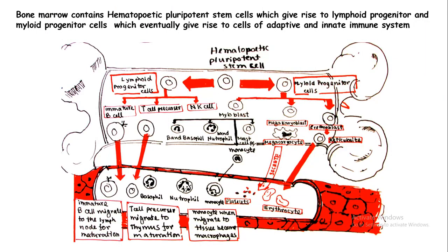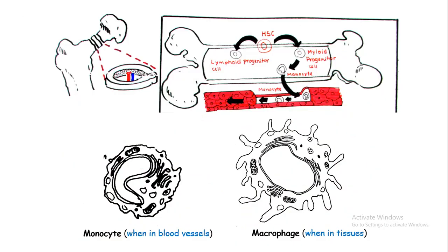Hematopoietic pluripotent stem cells give rise to myeloid progenitors or lymphoid progenitors. From the myeloid progenitor, all parts of the innate immune system arise, such as macrophages, neutrophils, basophils, mast cells, etc. From the lymphoid progenitor, all the adaptive parts of the immune system appear, for example T lymphocytes, B lymphocytes, and natural killer cells.